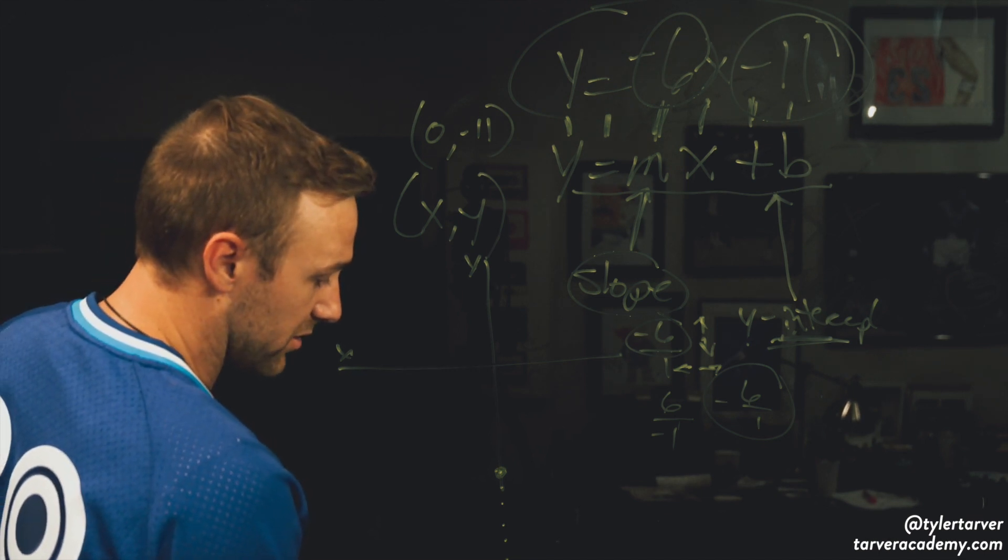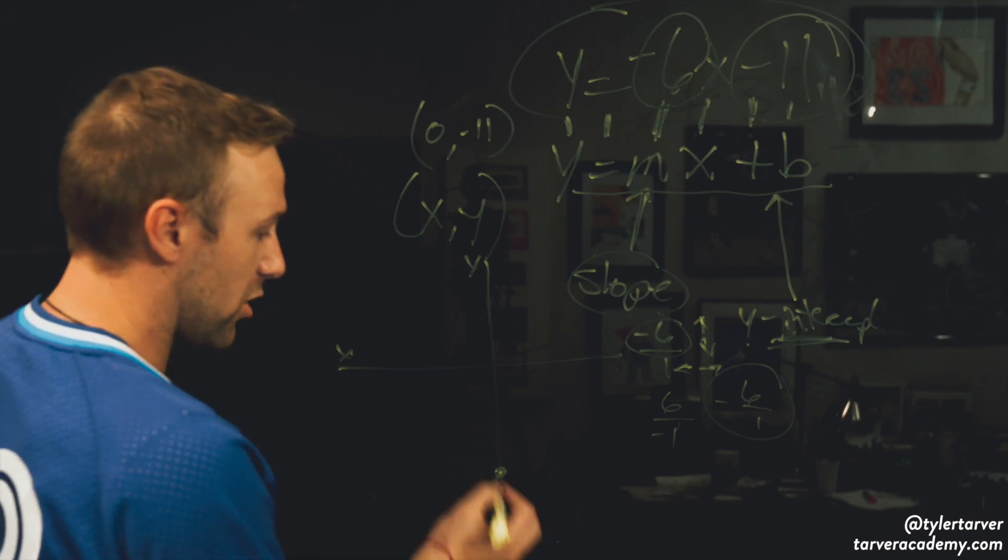Down 6 from this point, 1, 2, 3, 4, 5, 6, over 1. These are two coordinates.